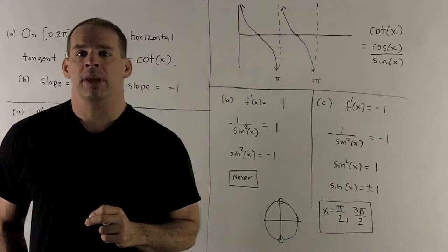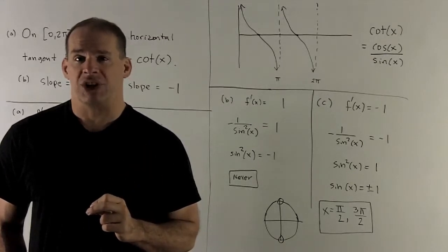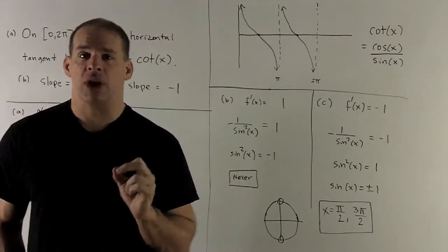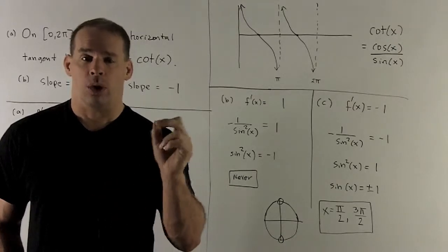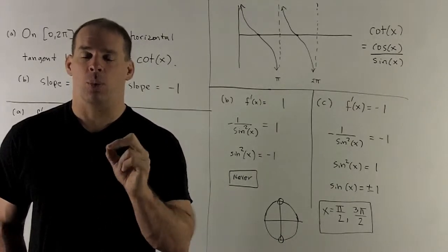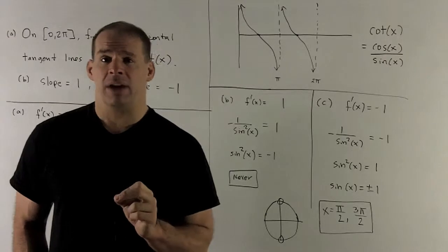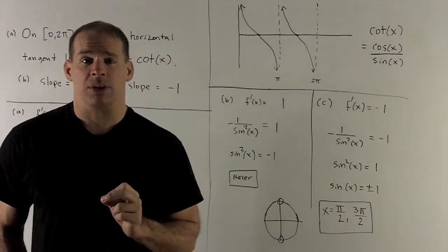Let's try the second part. How about where the slope of the tangent line is equal to 1? So, now we're trying to solve minus 1 over sine squared of x equal to 1. Clear the denominator. That gives me sine squared of x equal to minus 1.